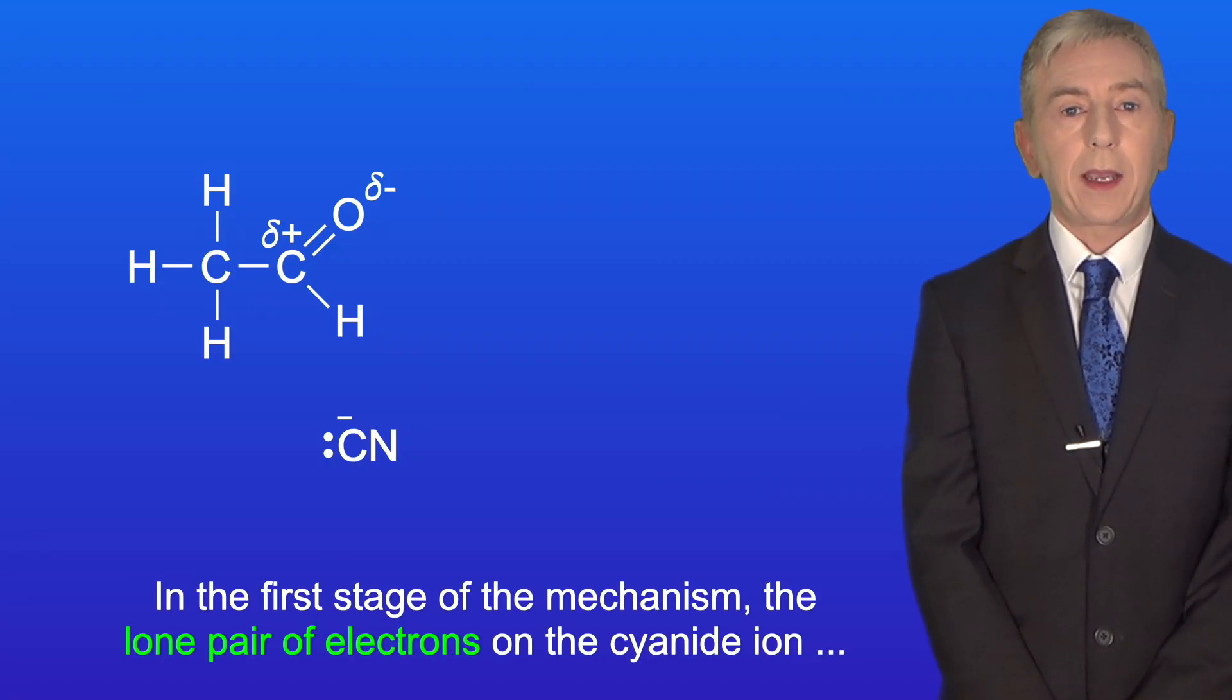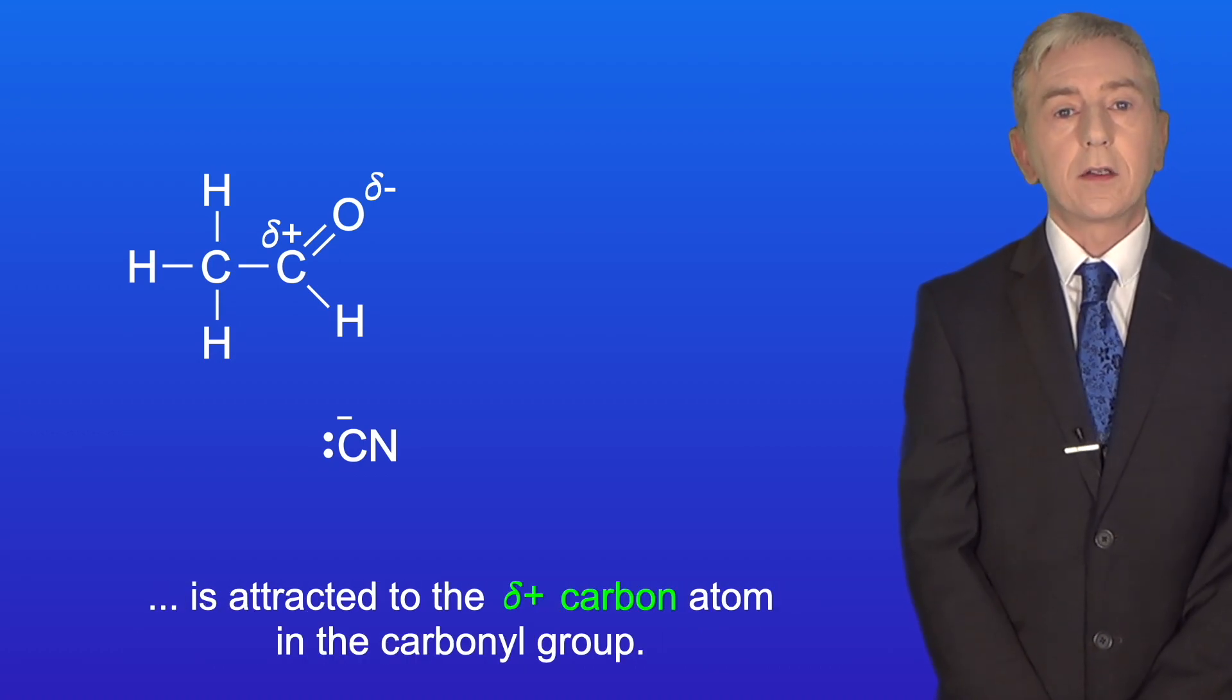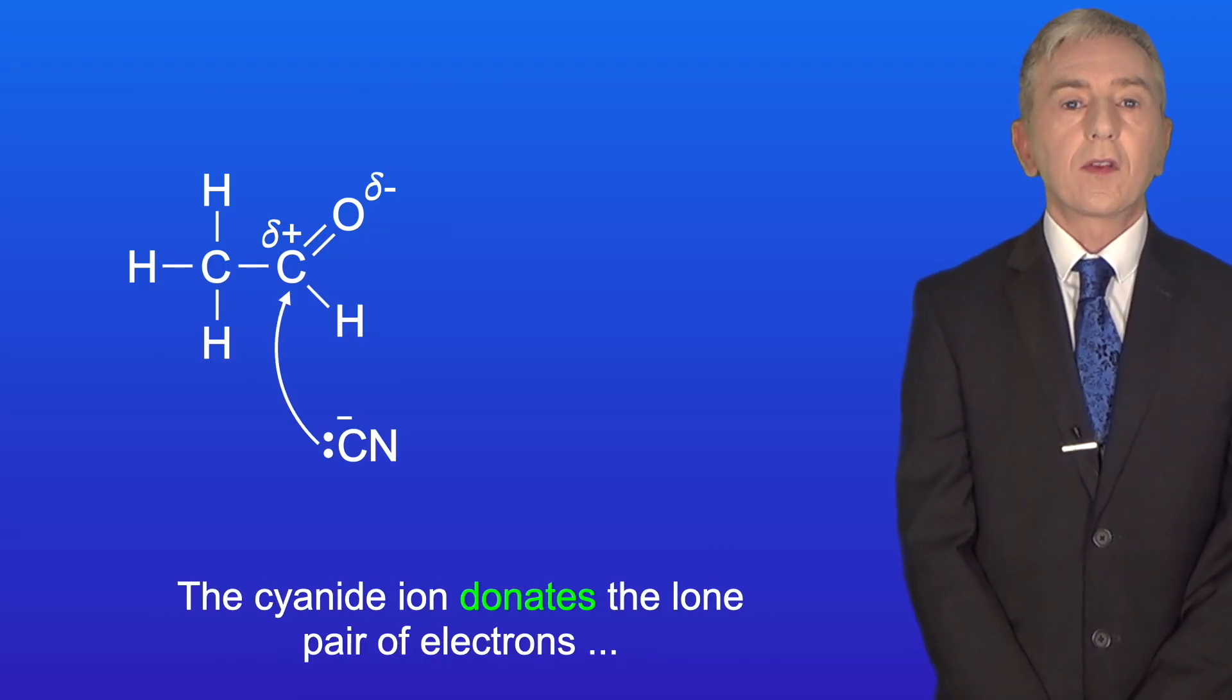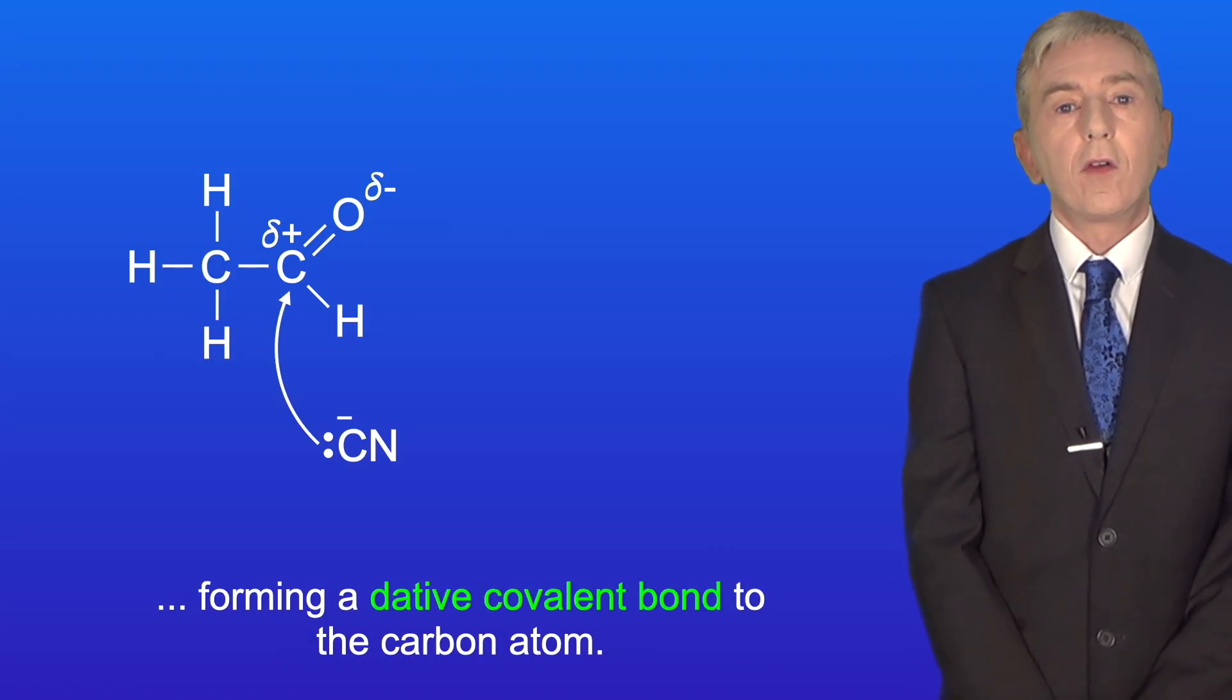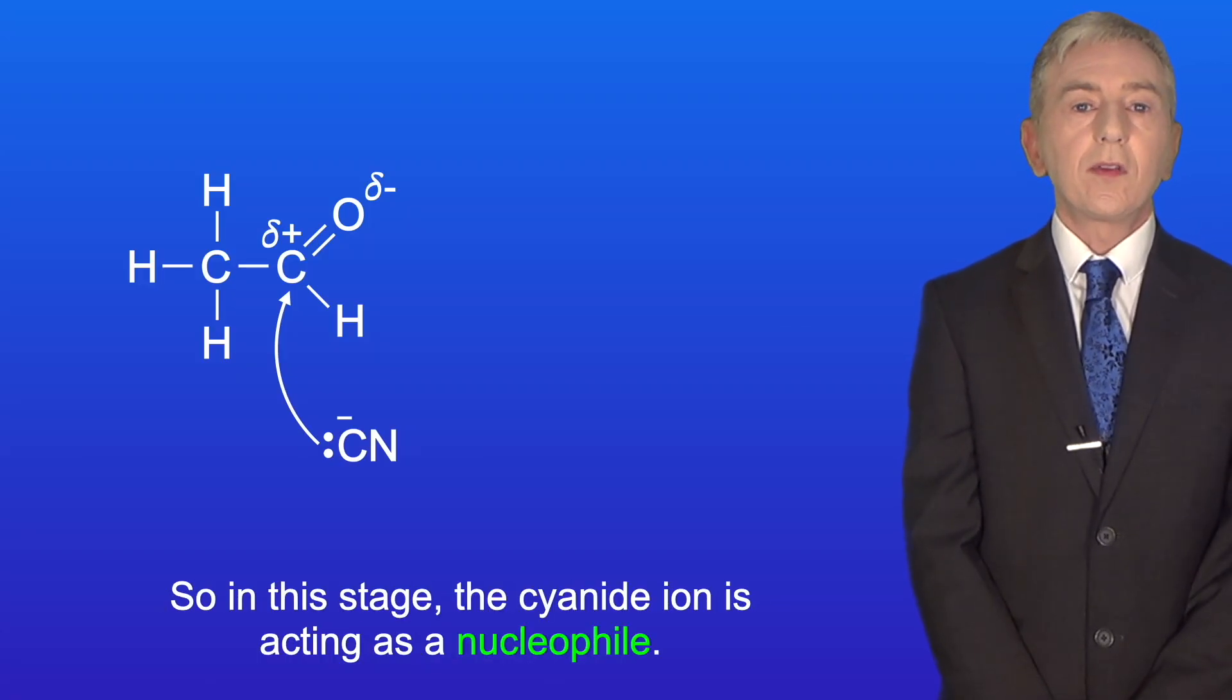In the first stage of the mechanism the lone pair of electrons on the cyanide ion is attracted to the delta positive carbon atom in the carbonyl group. The cyanide ion donates the lone pair of electrons to form a dative covalent bond to the carbon atom. So in this stage the cyanide ion is acting as a nucleophile.